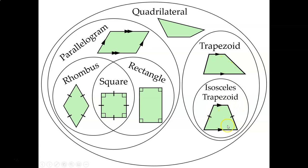For example, an isosceles trapezoid is a specific version of a normal trapezoid. Isosceles means that it has two congruent sides. And within our parallelogram category, we have a rhombus, which is a type of parallelogram that has four congruent sides, and a rectangle is another type of parallelogram — it has four congruent angles. And then a square is a specific version of a rhombus, a rectangle, and a parallelogram.